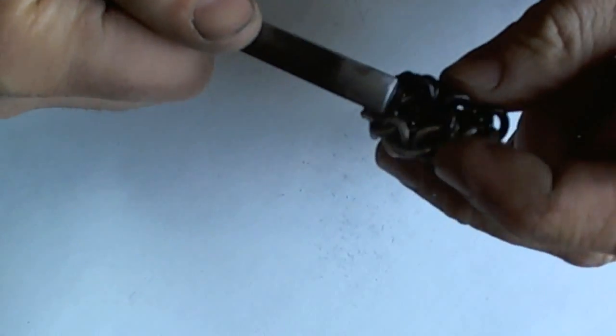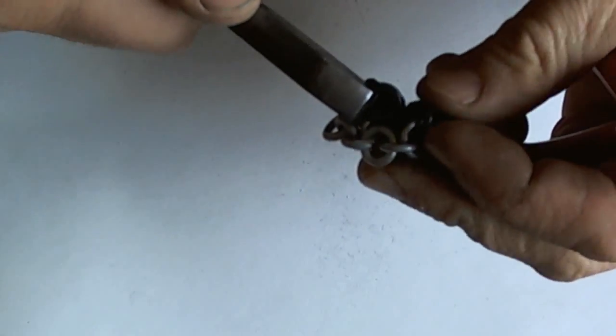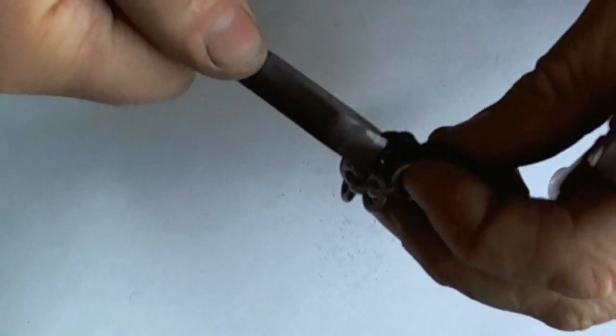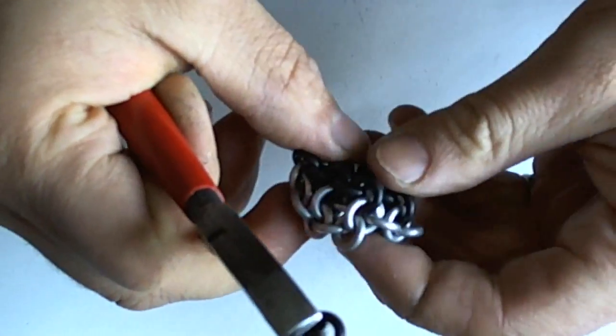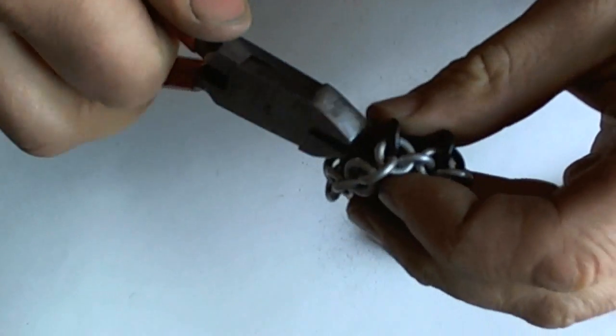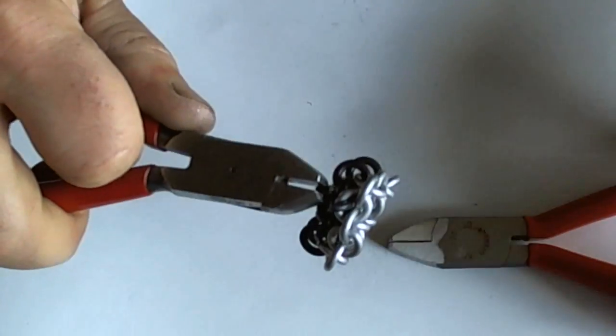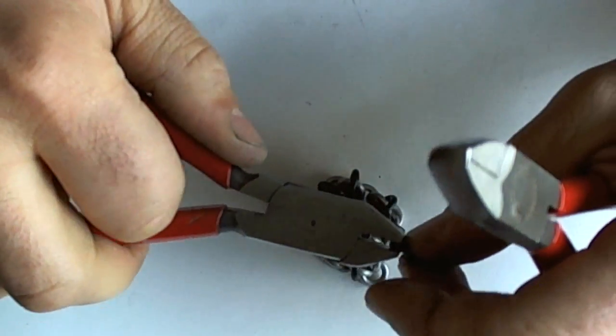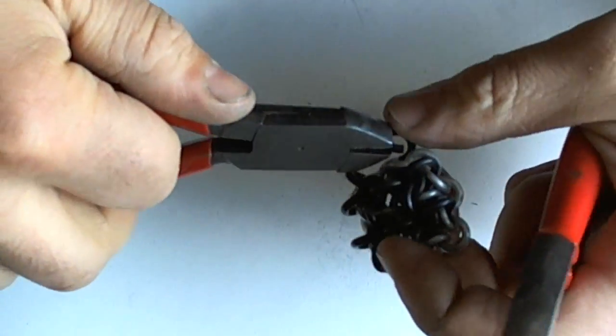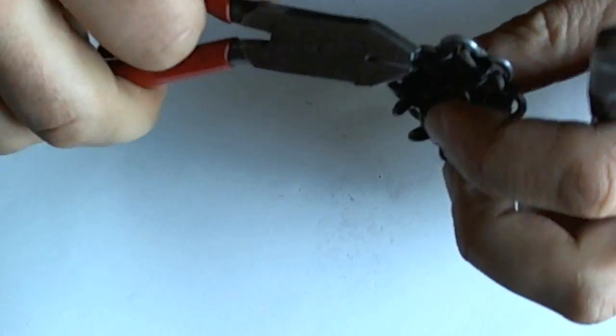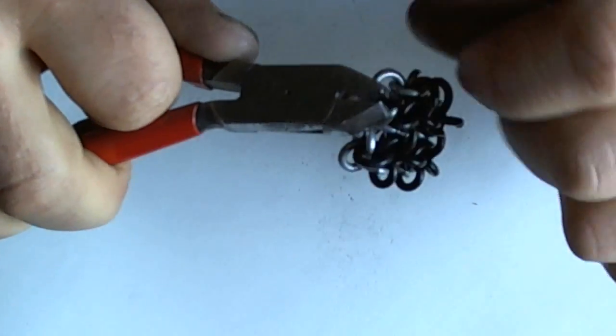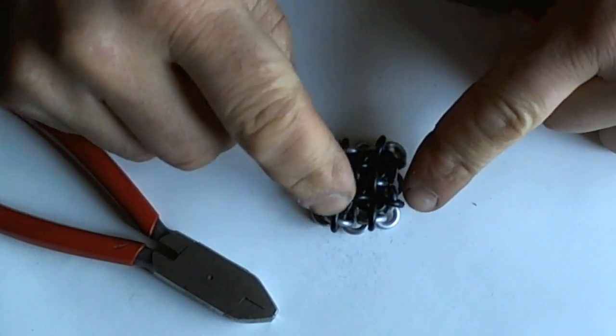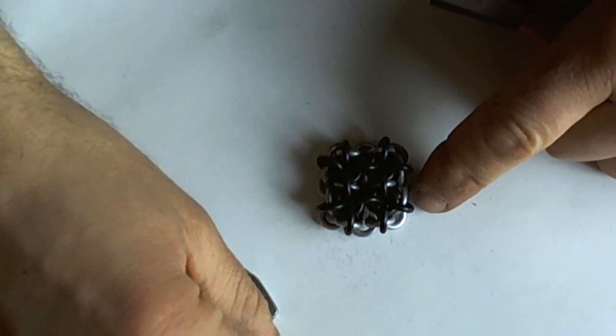Sometimes in this weave it just takes some working at it. There we go. Okay, one more. See, that one went really easy. So second level is complete. It's starting to shape up a little bit.